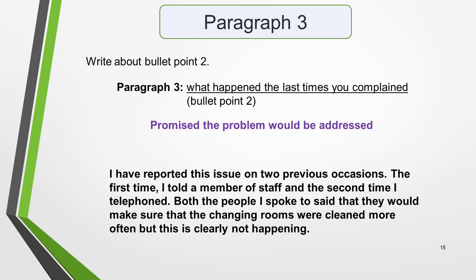The third paragraph should cover the second bullet point, which is what happened the last times you complained. My idea for this was that they promised the problem would be addressed. You could write something like this: 'I have reported this issue on two previous occasions. The first time I told a member of staff, and the second time I telephoned. Both the people I spoke to said that they would make sure that the changing rooms were cleaned more often, but this is clearly not happening.'